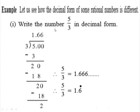First example: write the number 5/3 in decimal form. Here we will divide 5 by 3. Since 5 is bigger than 3, we take 3 once — 3 ones are 3. Subtract 3 from 5 to get remainder 2. We write 5 as 5.00 using the decimal point, then bring down the 0 and put the decimal point in the quotient. The number formed is 20; 3 sixes are 18. Subtract 18 from 20 to get remainder 2.